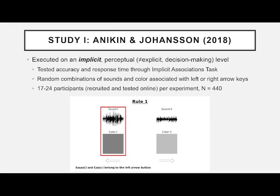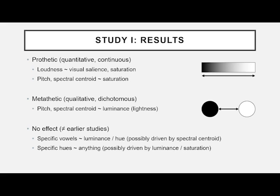We used random combinations of sounds and colors associated with left and right mouse buttons, with about 20 participants per experiment setup. Participants got two colors and two sounds at the same time, one of each assigned to left and right. They were then presented with one stimulus — either a color or a sound — and had to press the correct button. We found a very strong connection between loudness, pitch, and spectral centroid with saturation, and also between pitch, spectral centroid, and luminance. Crucially, there was no effect for specific vowels or specific colors — the underlying parameters seem to be what matters.